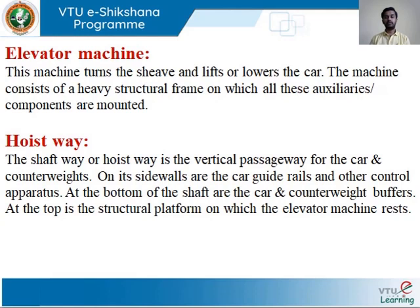The next one is the hoist way. The shaft way or hoist way is the vertical passageway for the car and the counterweights. On the side walls of the hoist way you get to see guide rails and other controlling apparatus. At the bottom of the shaft you have the car and the counterweight buffers, located in the lift pit of the hoist way. When the lift car happens to rest on the lowermost allowable floor, we need ground buffers so the car comes and rests on the buffer without any problem.